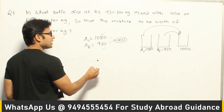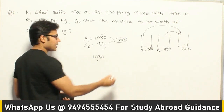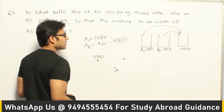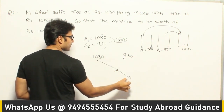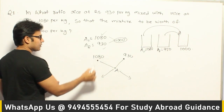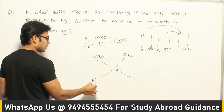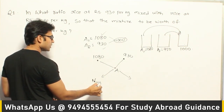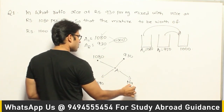What does the diagram say? Put the higher value, A1 = 1080, the group average in the middle, and the lower value 930. This side represents the rice with cost 1080, which I'll call N1080, and this side represents the rice with cost 930.